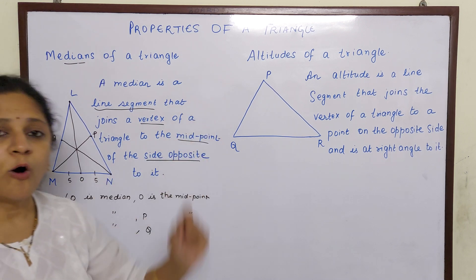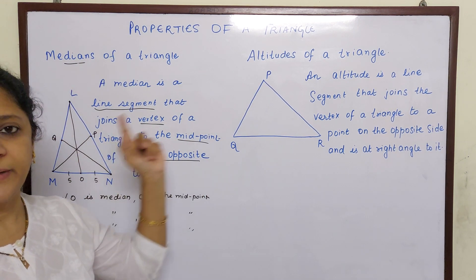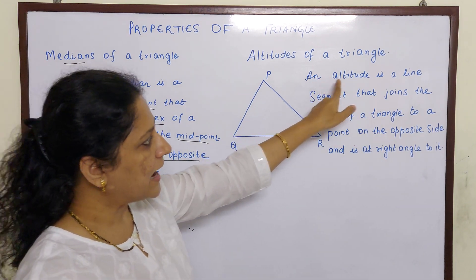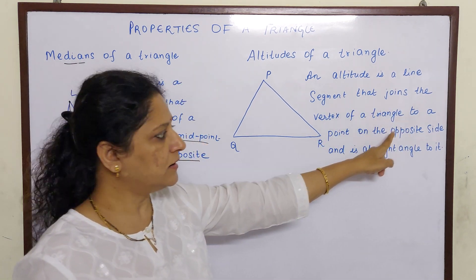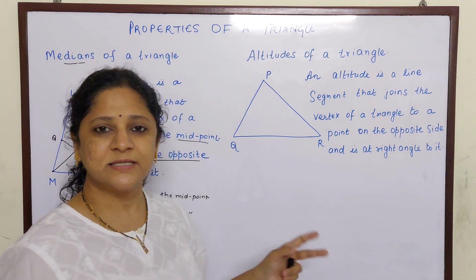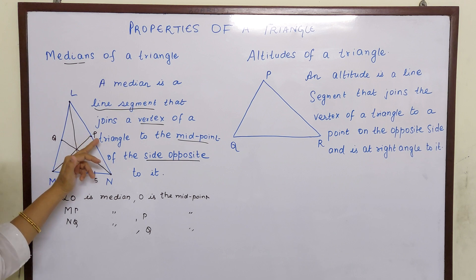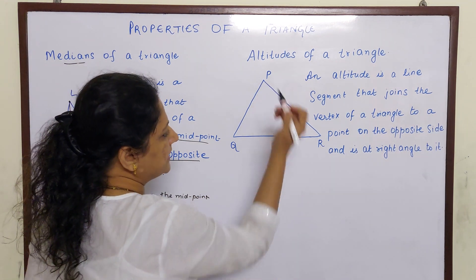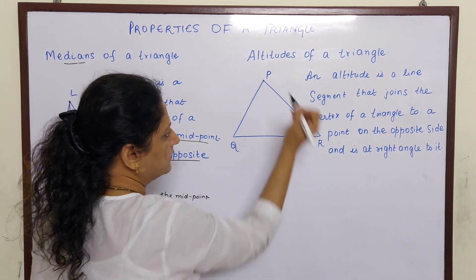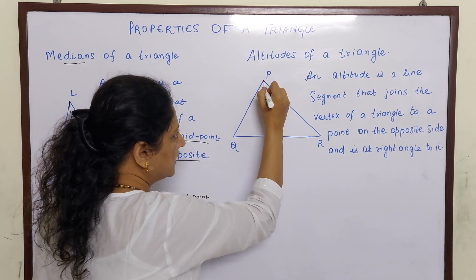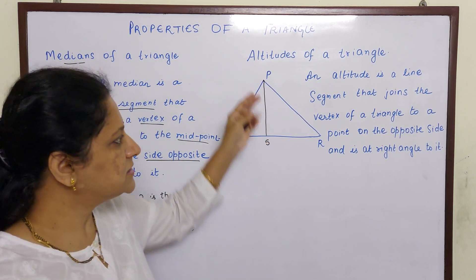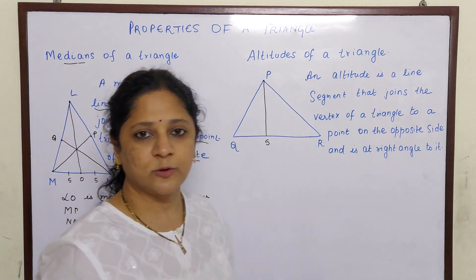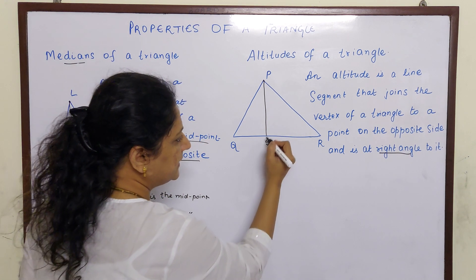Now let us go to the next topic: altitudes of a triangle. Now what is the difference between median and altitude? An altitude is also a line segment that joins the vertex of a triangle to a point on the opposite side — but it is not the midpoint. Here when I draw this line segment from a vertex, it is not necessary that the foot will be the midpoint. It is just a line segment, but it is at a right angle to the side.